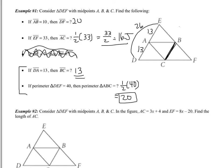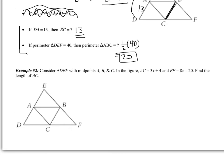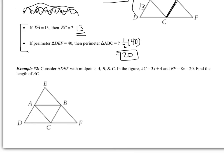So now we're going to continue with these properties, but we're going to add in some algebra. Let's look at example two. It says, consider triangle DEF with midpoints A, B, and C. When it tells you this, all that means is AB, BC, and AC are midsegments.